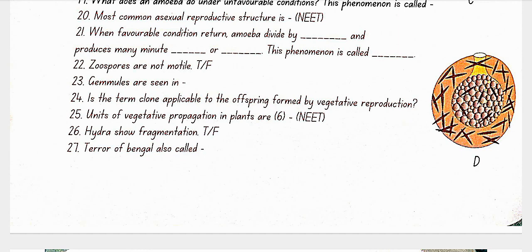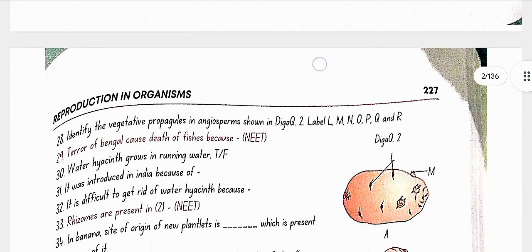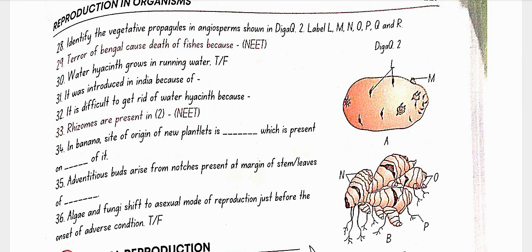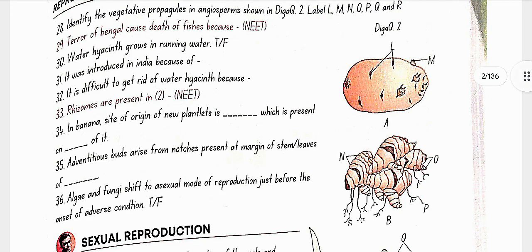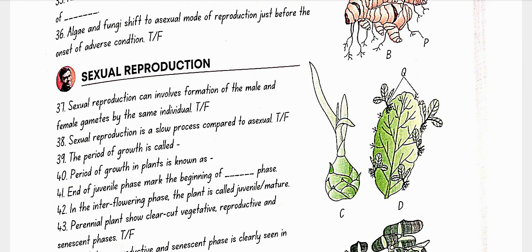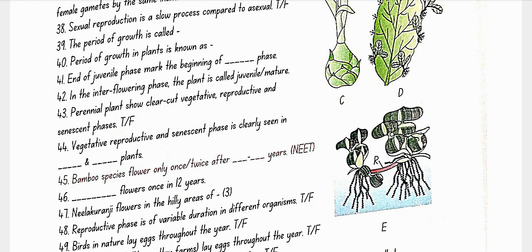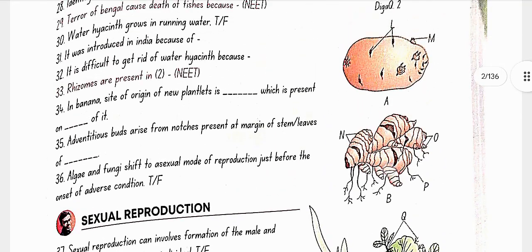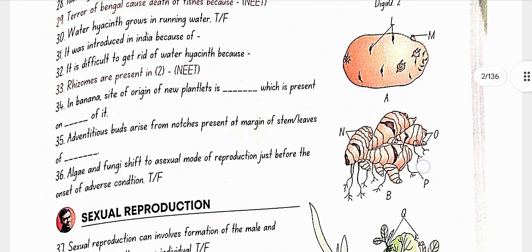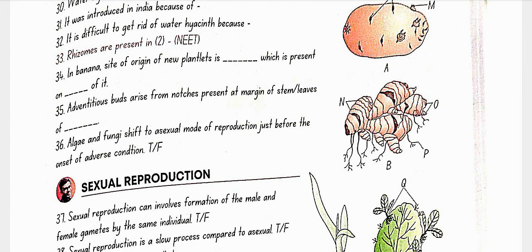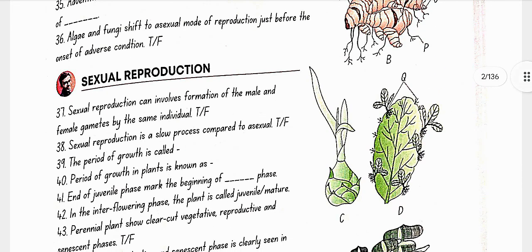Hydra shows fragmentation — true. Terror of Bengal is also called water hyacinth. Identify the vegetative propagules in angiosperm shown in diagram 2. Here A is the eyes of potato, B is the rhizome of ginger, C is the bulbil of agave, D is leaf buds of Bryophyllum, and E is the offset of water hyacinth. Labels: L is eyes, M is germinating eye buds, N is nodes, O is buds, P is adventitious root, Q is adventitious buds, and R is offset.